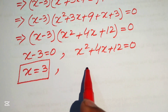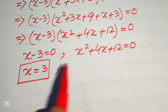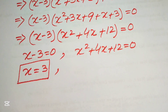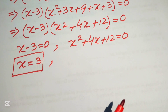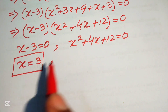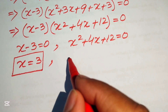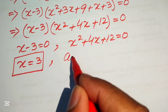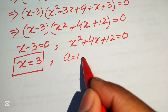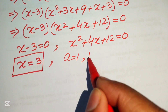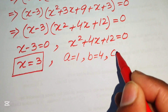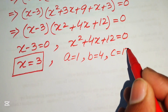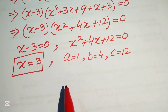To find the other roots, we solve the quadratic equation x squared plus 4x plus 12 equals 0. The coefficients are a equals 1, b equals 4, and c equals 12.